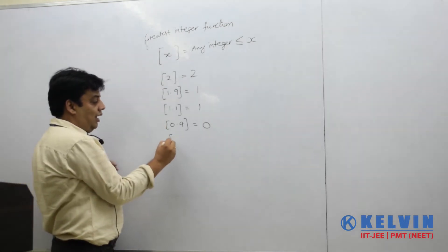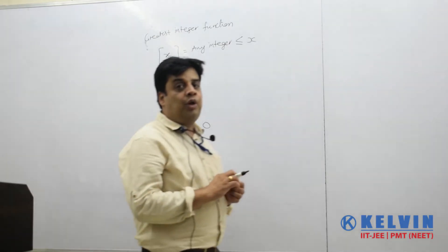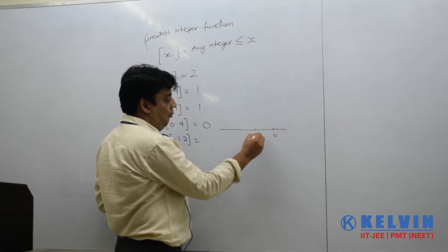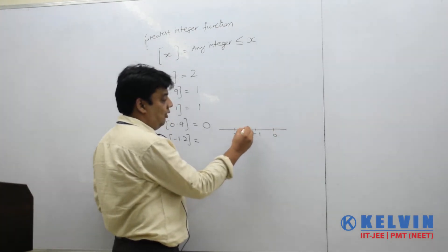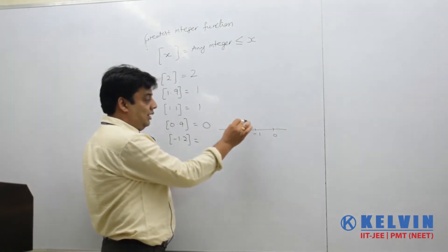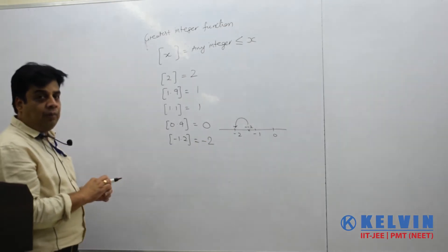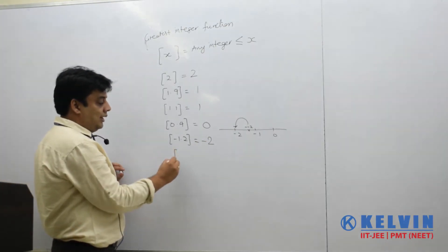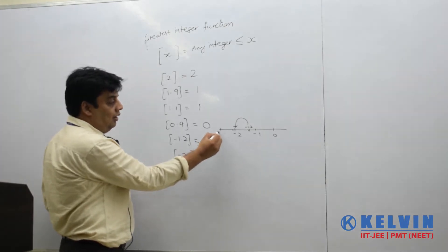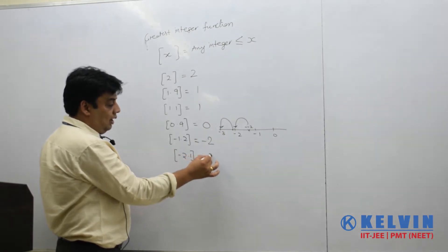Now suppose the number is minus 1.2. Minus 1.2 is lying between minus 1 and minus 2. The integer just less than minus 1.2 is minus 2. So Greatest Integer of minus 1.2 is minus 2. One more example: minus 2.1 — the integer just less than minus 2.1 is minus 3. So Greatest Integer of minus 2.1 is minus 3.